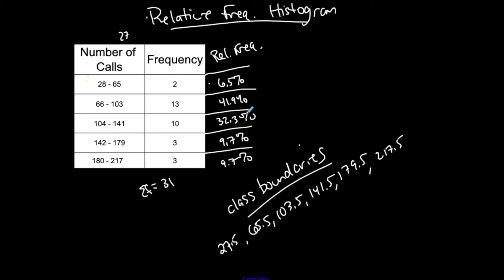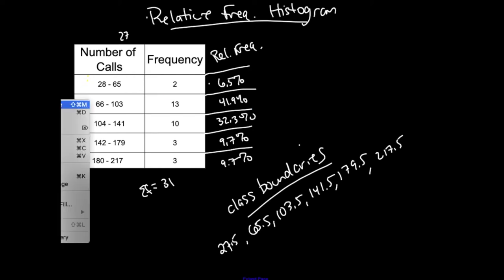Technically, this is a relative frequency table. Now I want to create a relative frequency histogram. So, alright. So same idea. It's going to be bars of equal width. Not much of a difference in that sense. They should not have any gaps.